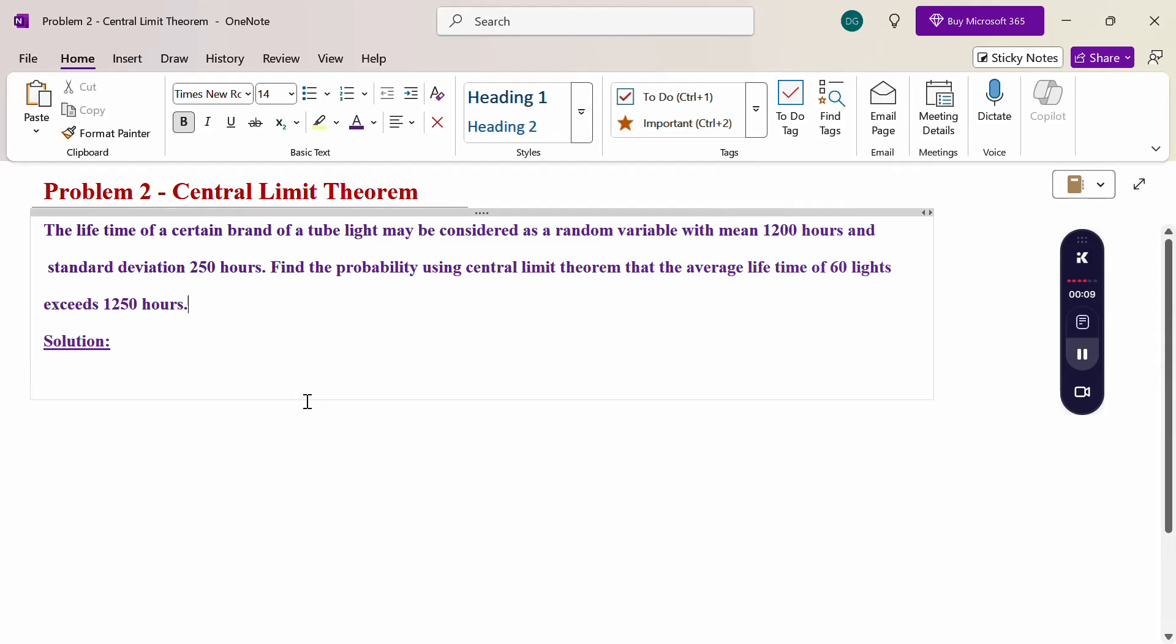Look at this problem. The lifetime of a certain brand of tube light may be considered as a random variable with mean 1200 hours and standard deviation 250 hours. Find the probability using central limit theorem that the average lifetime of 60 lights exceeds 1250 hours.